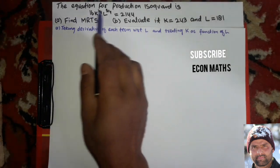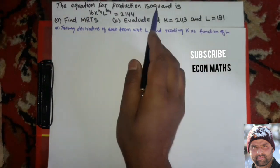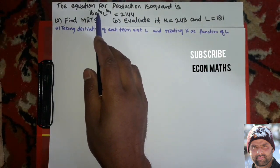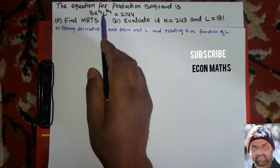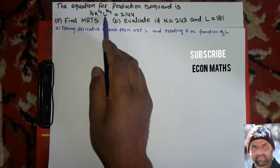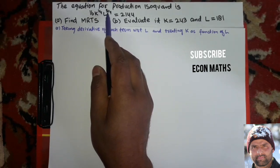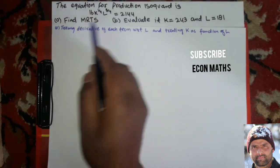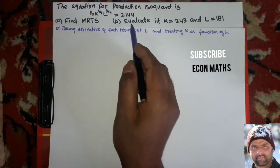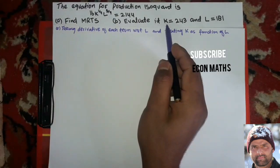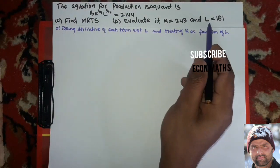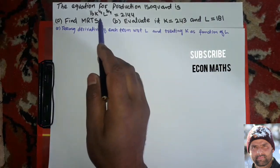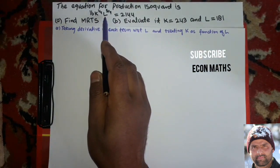The question is: the equation for the production isoquant is 16 times k to the power 1/4 times L to the power 3/4 is equal to 2,144. Find MRTS, evaluated at k equal to 243 and L equal to 181, where k is the capital and L is the labor.